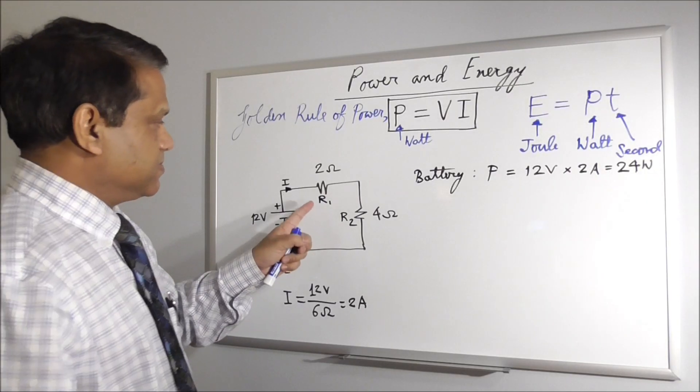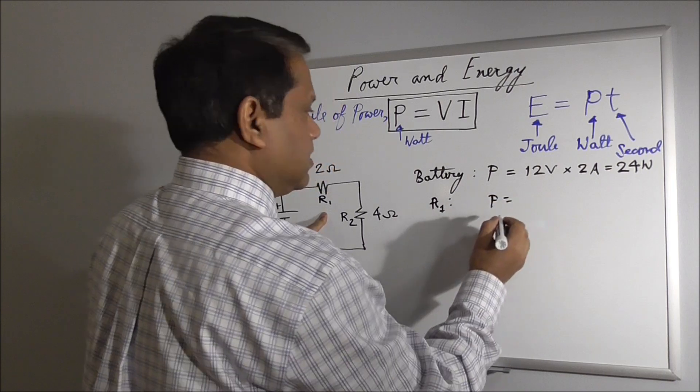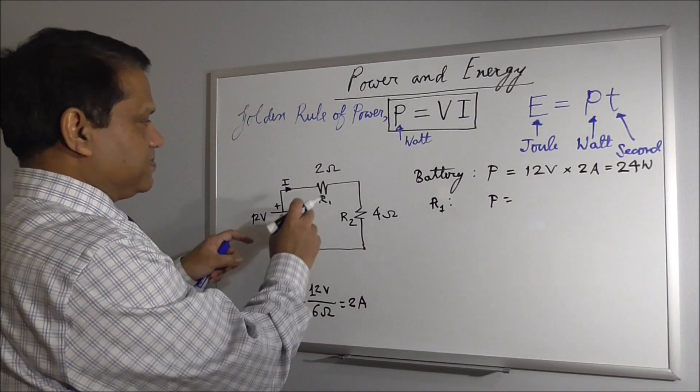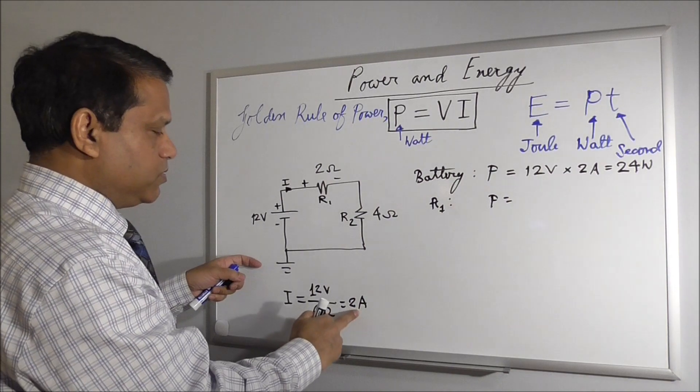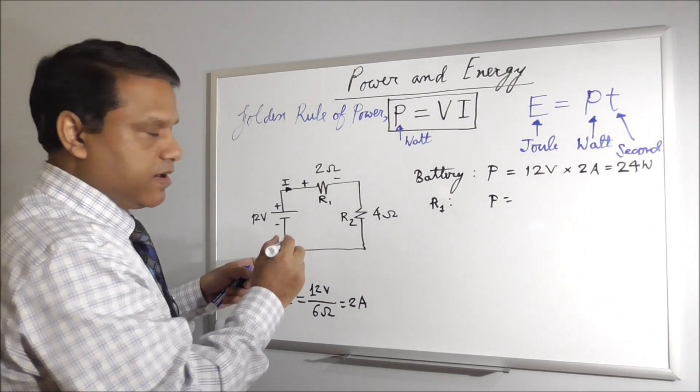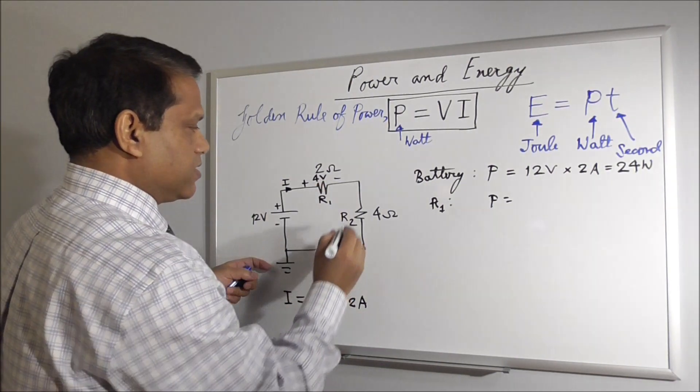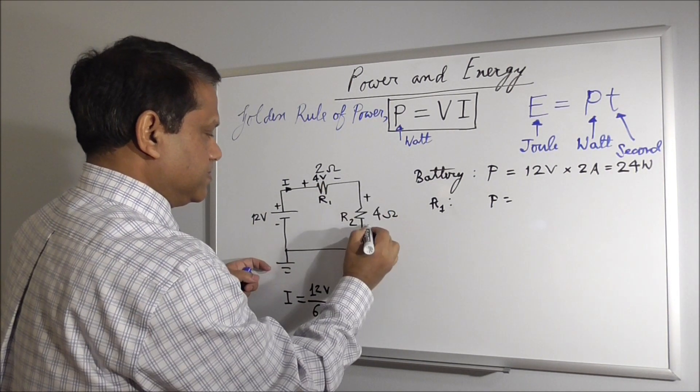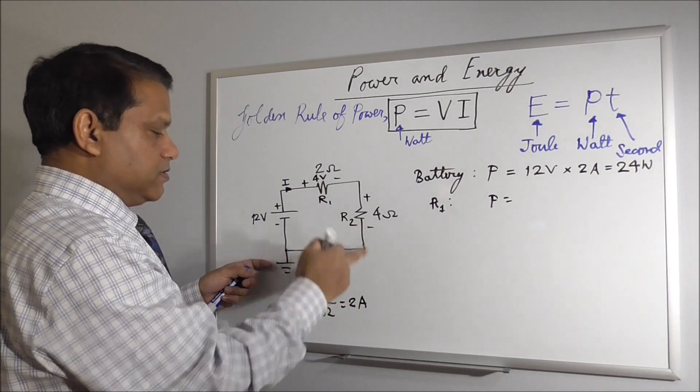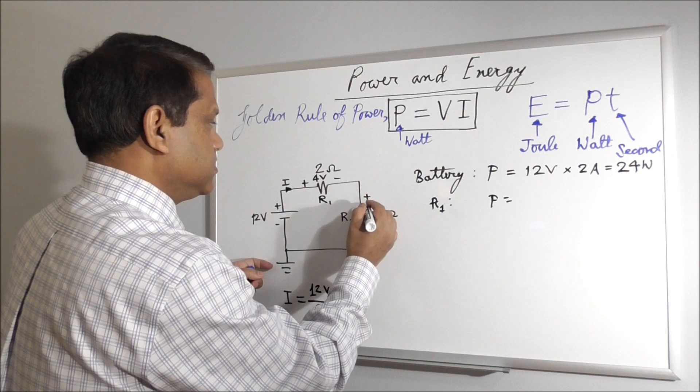For the resistance R1, power is, what is the voltage here? I is 2 ampere, R is 2 ohm, V equals IR, so it will be 4 volt. And what is the voltage here? 2 ampere times 4 ohm, it will be 8 volt.